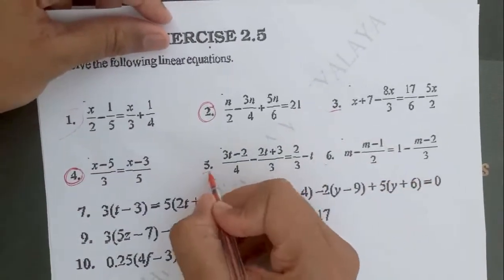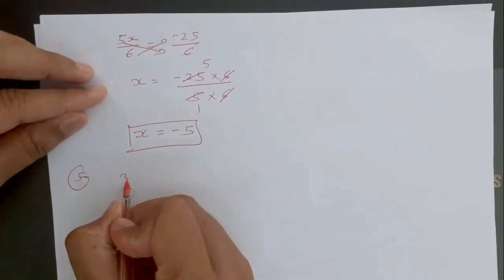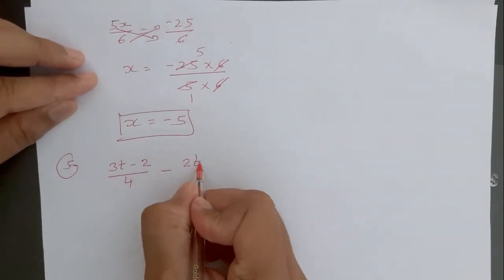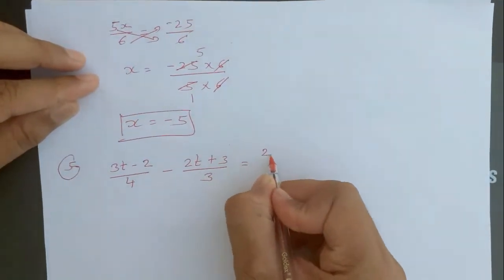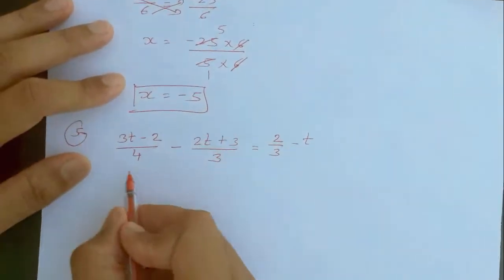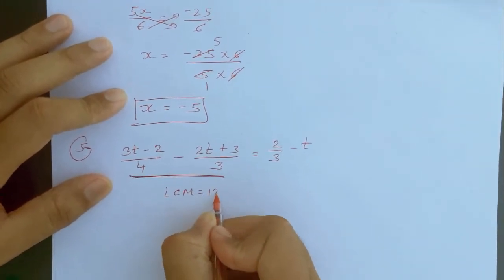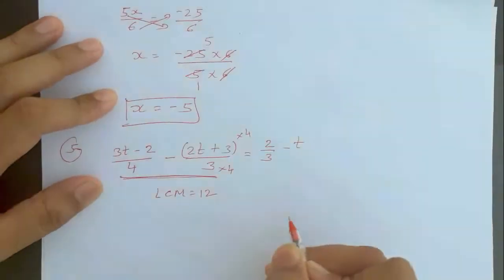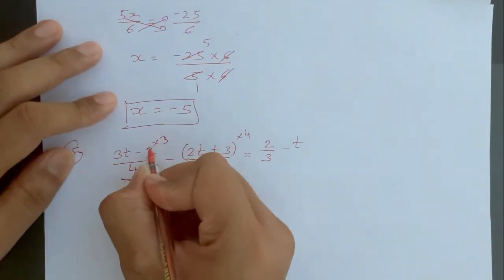So let us start with the fifth one. The fifth question is: 3t minus 2 upon 4 minus 2t plus 3 upon 3 is equal to 2 by 3 minus t. Now see, the LCM for 3 and 4 will be 12. So we will multiply this 3 by 4, meaning we have to multiply both numbers by 4, and this 4 is going to multiply by 3, so we will multiply both numbers by 3 as well.